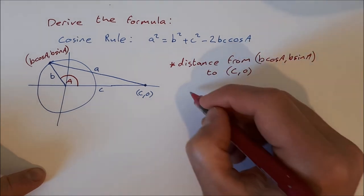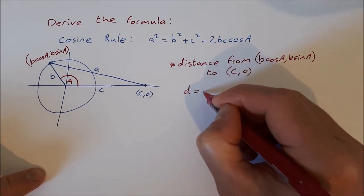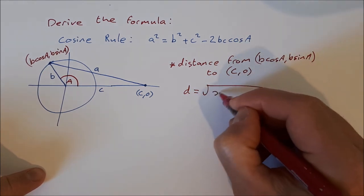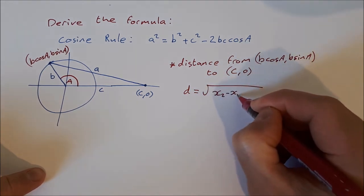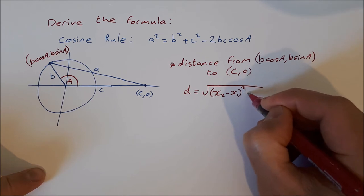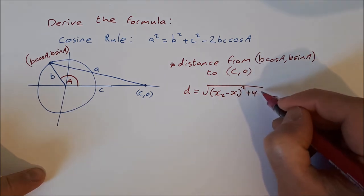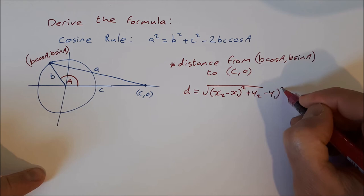And to do that, we use the distance formula: d is equal to the square root of x2 minus x1 squared plus y2 minus y1 squared.